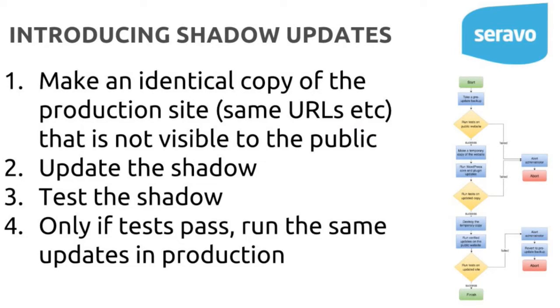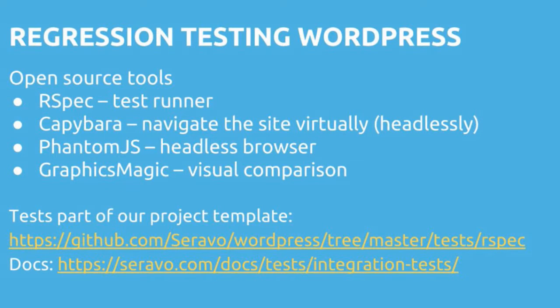We have a blog post that explains this in detail. What I'm telling you now is a simplified version — you can read the whole blog post and look up our complete system online. All of this testing is done using open source software. We use RSpec, a very mature Ruby test runner, and Capybara, also in Ruby, which is a toolkit for coding tests that virtually navigate pages and click buttons just like an end user would. We also use PhantomJS, a headless virtual browser, so you can run tests without a full graphical environment — you can run them server-side easily.